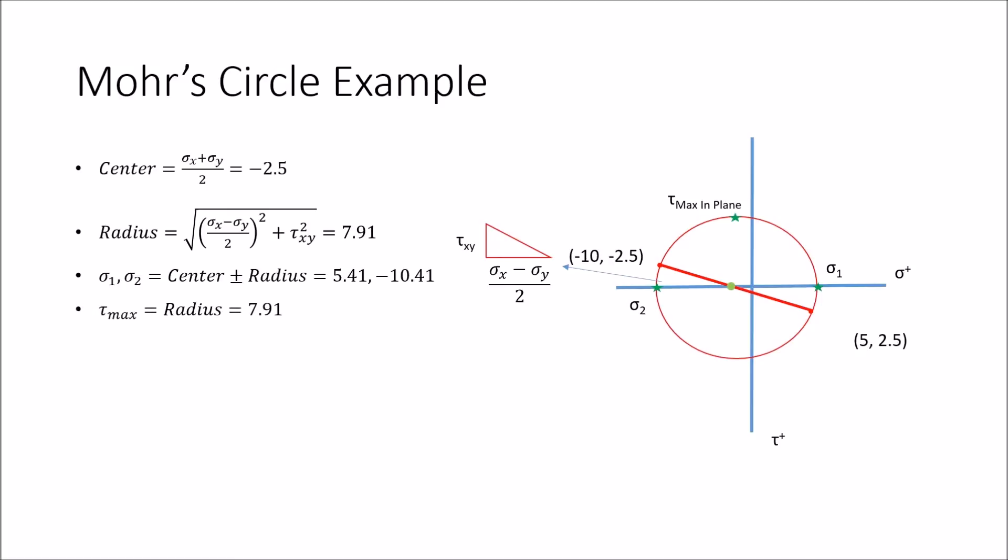Now we want to find the orientations that we need to rotate the original shape in order for them to be at these maximum orientations. We can refer back to our triangle to help us know how to find this angle of rotation. As I mentioned, all angles of rotation are half the sizes in the real world.